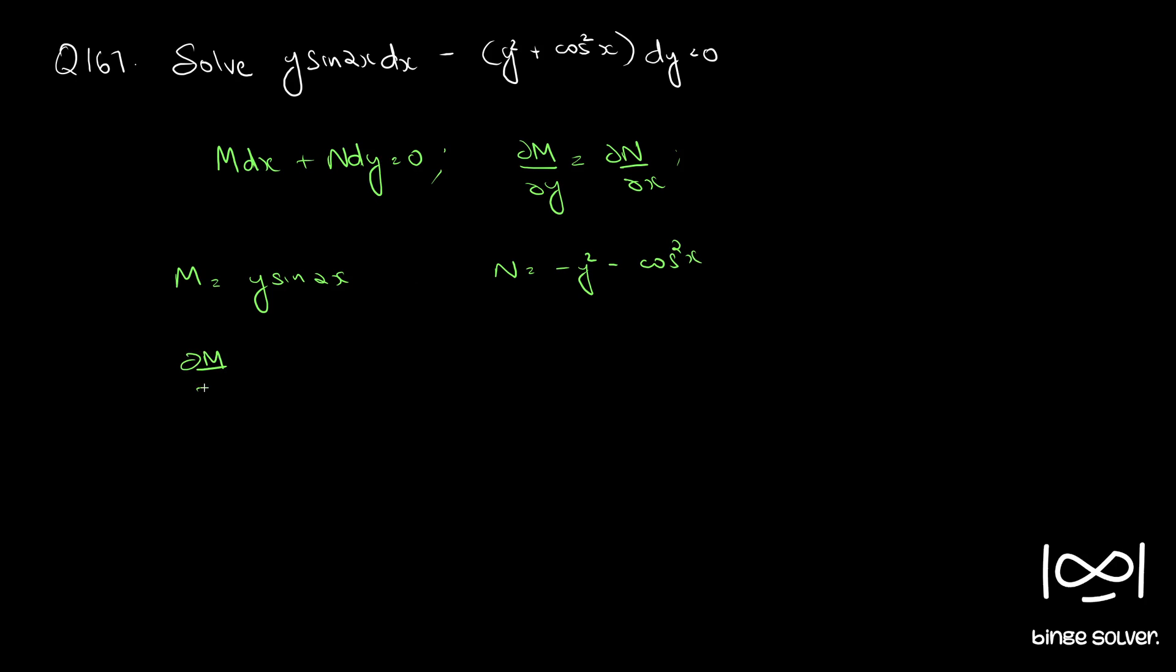So ∂M/∂y equal to sin 2x. X is a constant so sin 2x and ∂N/∂x is minus 2 cos x into minus sin x which is sin 2x. Therefore ∂M/∂y equal to ∂N/∂x implying differential equation is exact.